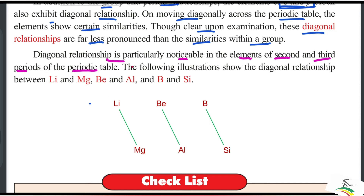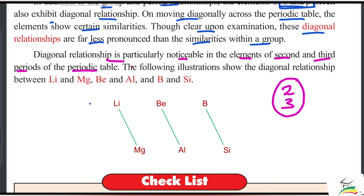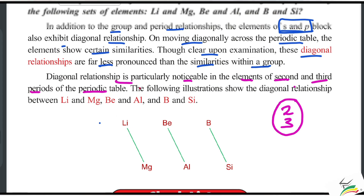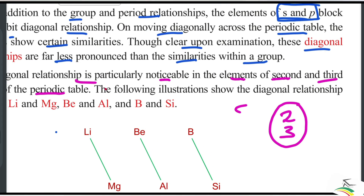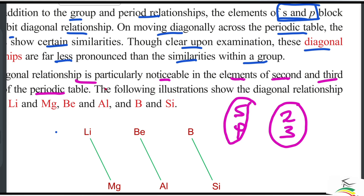The diagonal relationship is particularly noticeable in the elements of the second and third periods of the periodic table, especially in the s block and p block elements.